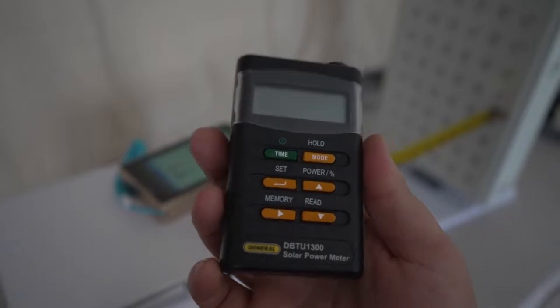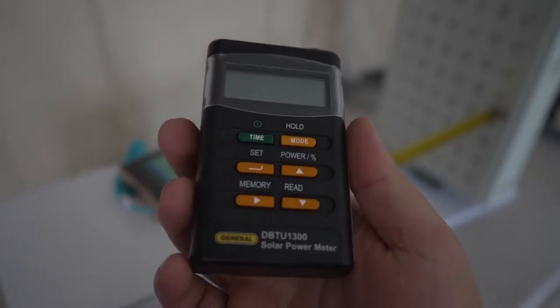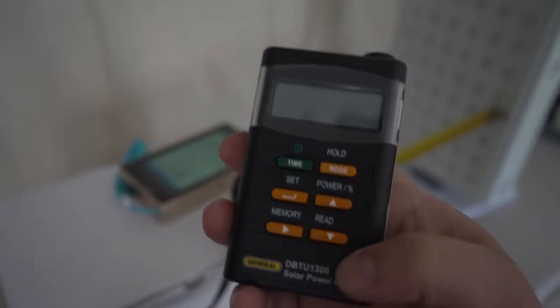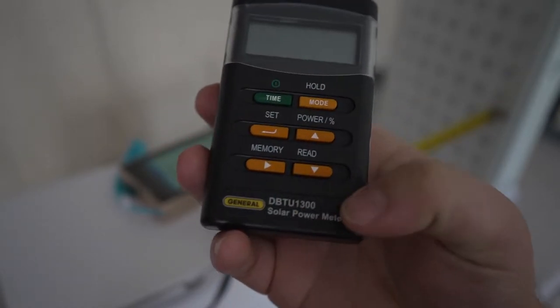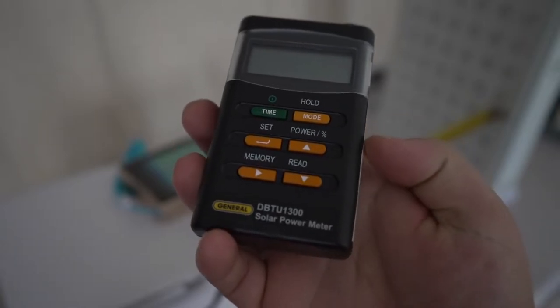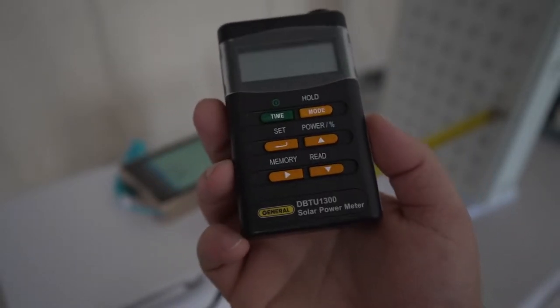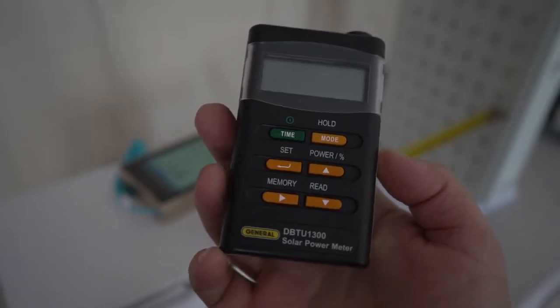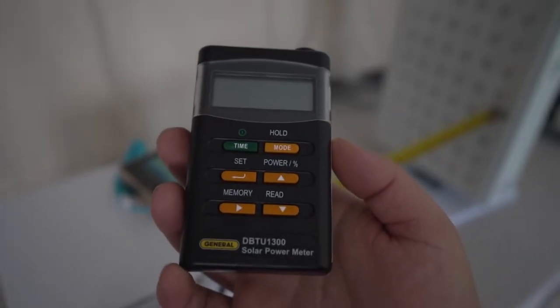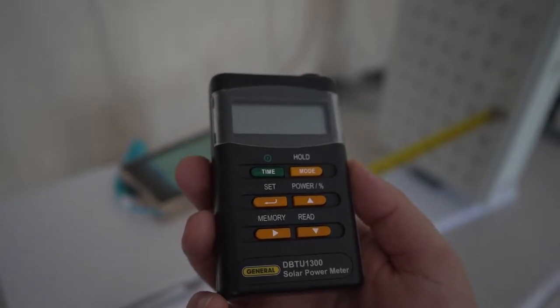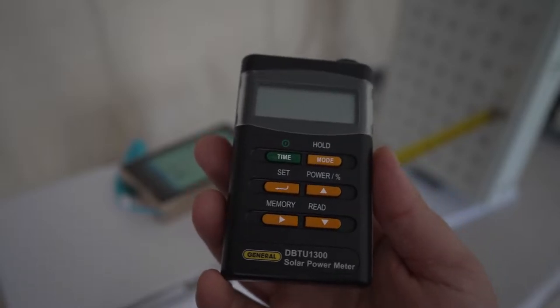This time we're going to use a TES-1333, and actually you'll see this is a rebranded TES-1333 from General Tools. You can find it on Amazon. I saw it was cheaper to buy it as the rebranded General Tools version, and my goal is to give you the most affordable options to get accurate intensity measurements, especially since most manufacturers are not providing it.